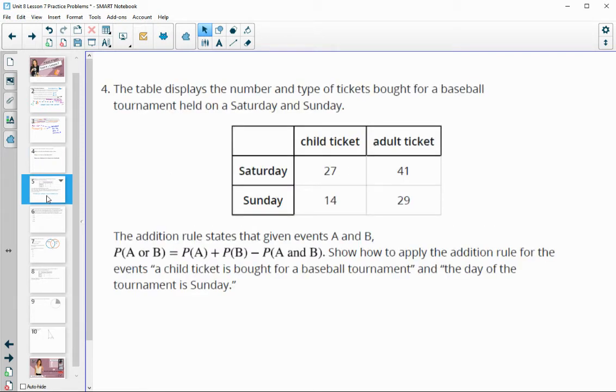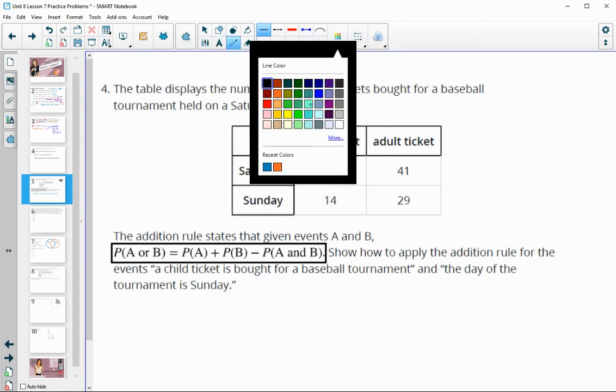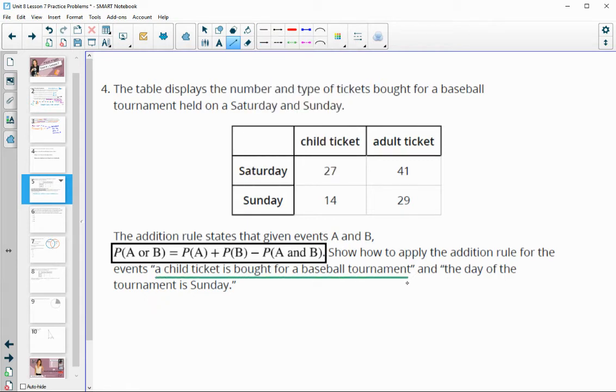Number four, the table displays the number and type of tickets bought for a baseball tournament held on a Saturday or a Sunday. The addition rule, so let's look at the addition rule here and show how it applies to these two events that a children's ticket is bought and the day of the tournament is on a Sunday. So our A event is going to be a child's ticket. So we're going to be doing the probability of a child's ticket plus our B event is that it's on Sunday. So probability of a child plus probability of Sunday minus the probability of both a child and Sunday.